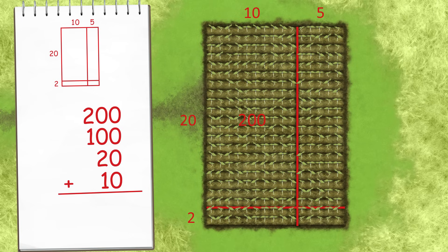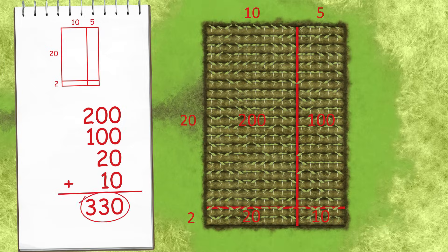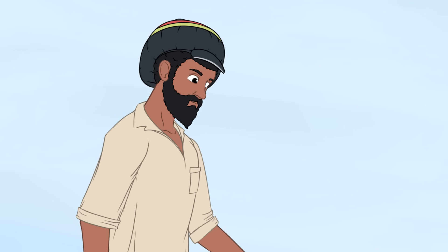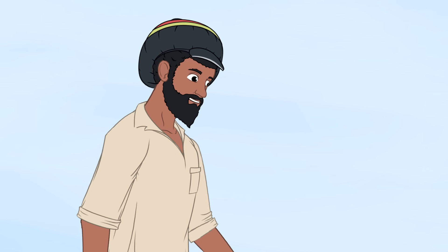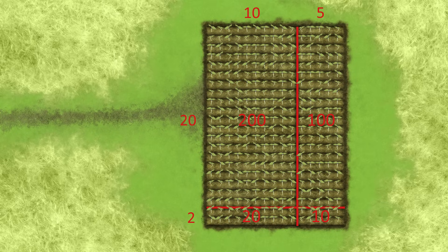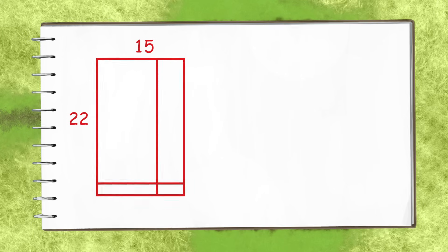He added 200, 100, 20, and 10. The sum was 330 — he checked it again. So there are 330 black beans in 22 rows of 15. Split up the place values in multiplication.